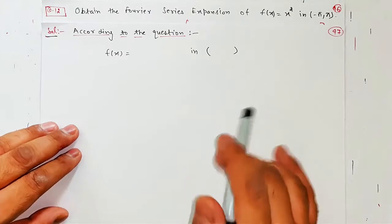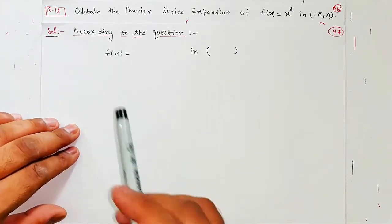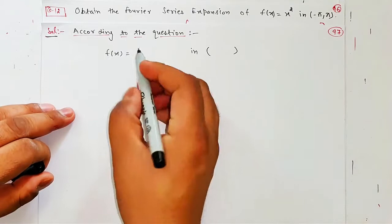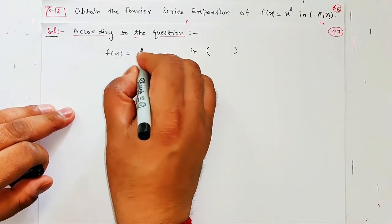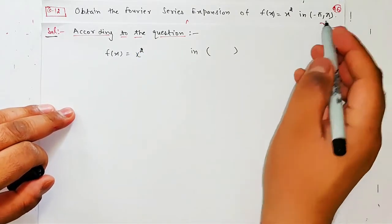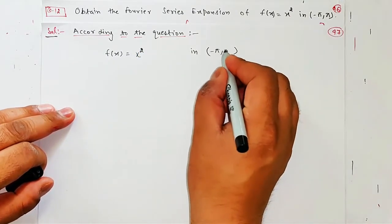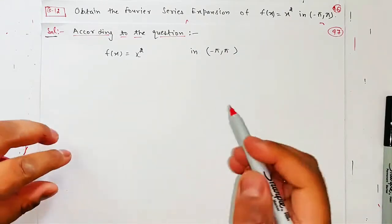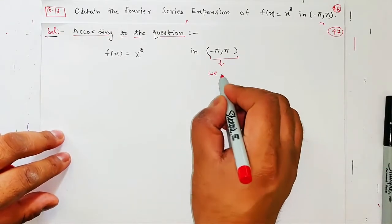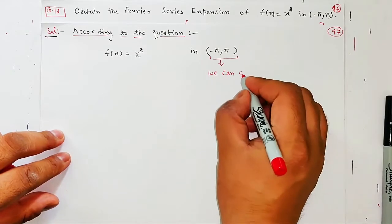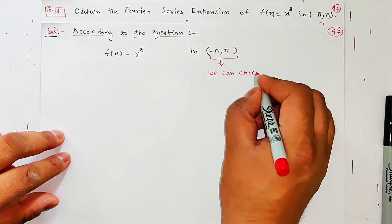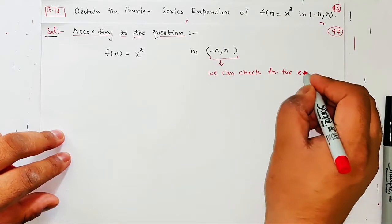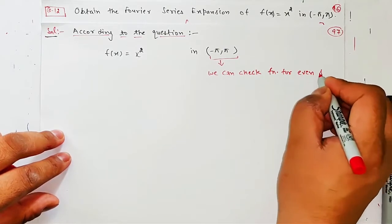Ab solution start karte hain according to the question. Sabse pehle aapko pata hai question mein kya identify karte ho: function. Function mujhe given hai x², aur doosri cheez interval. Toh interval mujhe given hai minus pi to pi. Ab jaise hi aapko interval pata laga — minus pi to pi — we can check the function for even and odd.